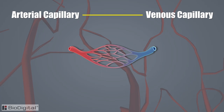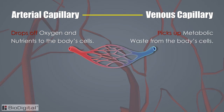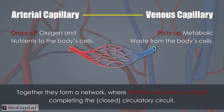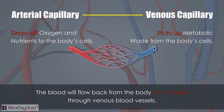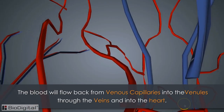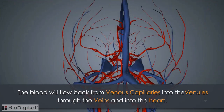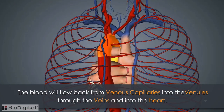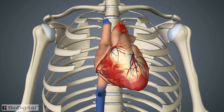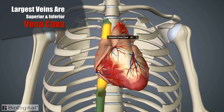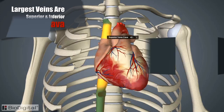The arterial side of the capillaries drops off oxygen and nutrients to the body's cells, while the venous side picks up metabolic waste from the body's cells. Together they form a network where arteries and veins connect, completing the closed circulatory circuit. Blood flows from the venous capillaries back to the heart through venules, which connect to larger veins, and ultimately return blood via the largest veins — the superior and inferior vena cava.